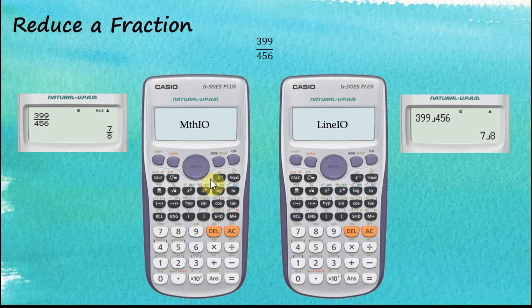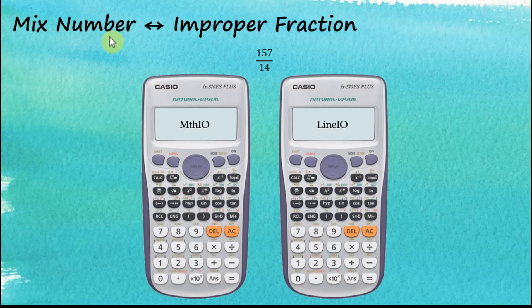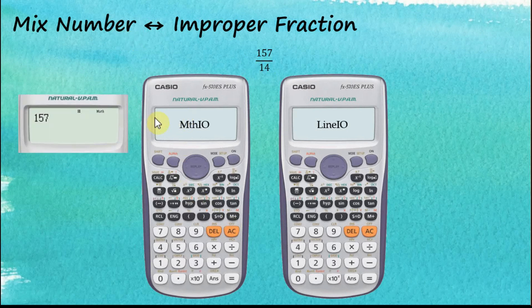Now let's look at changing mixed numbers to improper fractions and improper fractions back to mixed numbers. Let's say we have an improper fraction and would like to change it to a mixed number. In the calculator, we key in 157, then the fraction key, and the denominator is 14, then press equal.